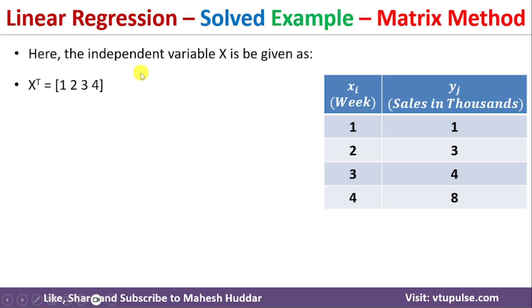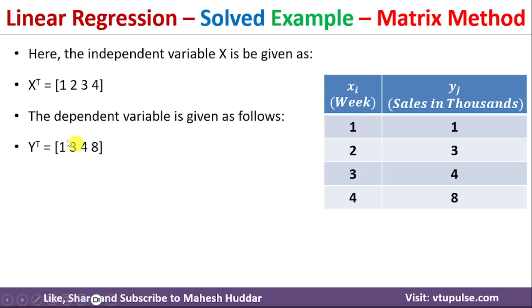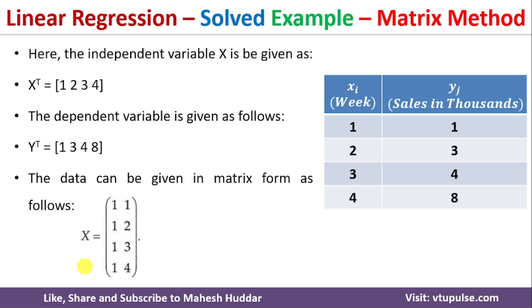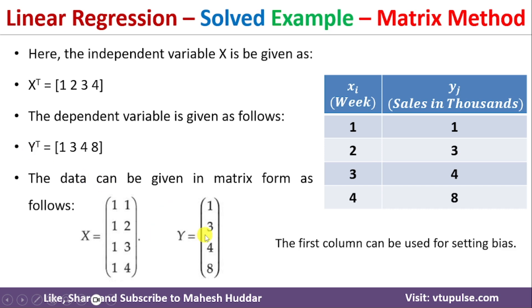First we will write everything in terms of matrices. X transpose is the independent variable: 1, 2, 3, 4. Y transpose is the dependent variable: 1, 3, 4, 8. We represent X as a matrix where the first column is all ones — this is the bias term — and the second column is the independent variable. Y is represented as a single column matrix: 1, 3, 4, 8.